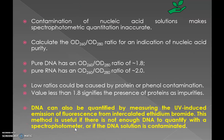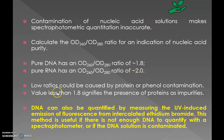Contamination of nucleic acid solutions makes spectrophotometric quantitation inaccurate. For checking the purity, we must calculate the OD260/280 ratio. Pure DNA has an OD260/280 ratio of around 1.8, while pure RNA has an OD260/280 ratio of 2.0. Low ratios could be caused by protein or phenol contamination. A value less than 1.8 signifies the presence of proteins as impurities.